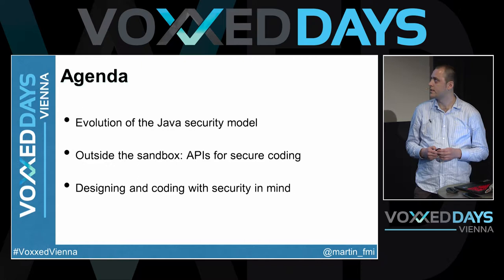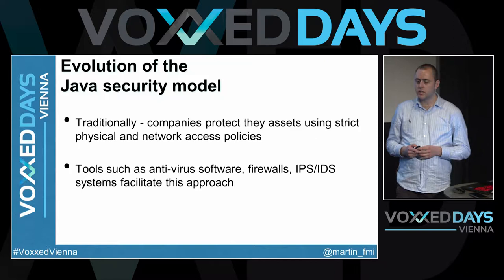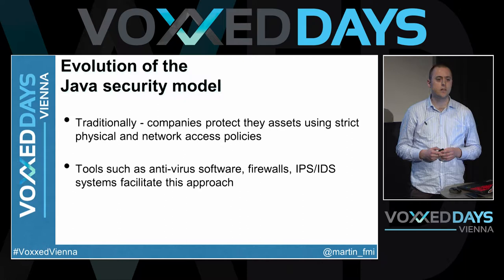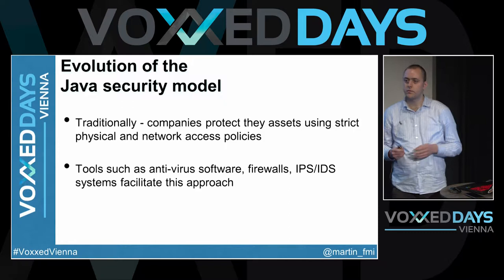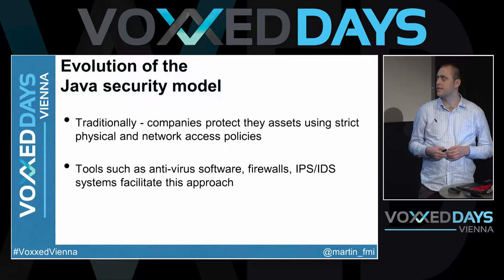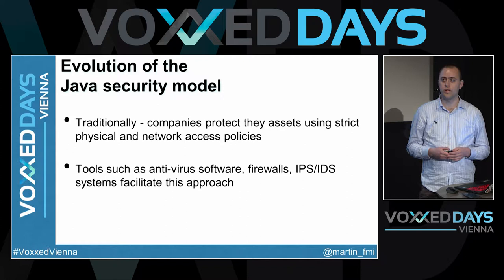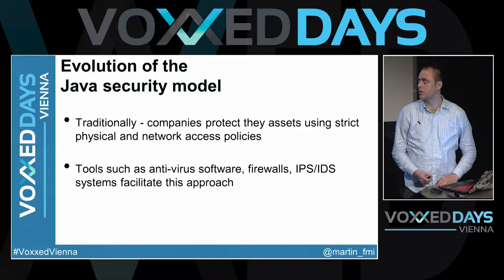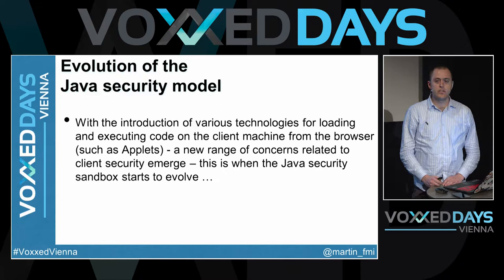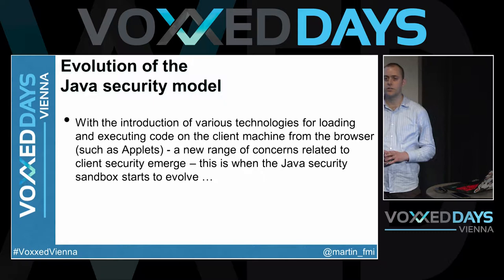The Java security model. Traditionally, companies have always tried to protect their assets, whether physical, software, or any type of asset the company owns. Many companies deploy different types of intrusion protection systems, firewalls, and antivirus systems to make sure that whatever goes into their network is as secure as possible. However, with the introduction of technologies that allow you to execute source code from the browser, such as Java applets, a whole new range of security concerns emerges.